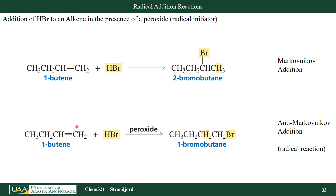If I take 1-butene and HBr but throw in some peroxide into my solution, I get the hydrogen adding to my most substituted carbon and my bromine to the least substituted. In other words, I get an anti-Markovnikov addition. With a little bit of research, I find out that these peroxides actually generate radicals, so this is a radical reaction that undergoes anti-Markovnikov addition.